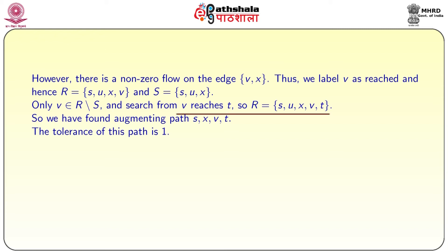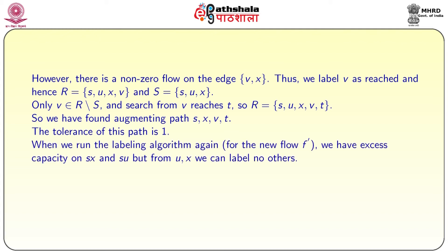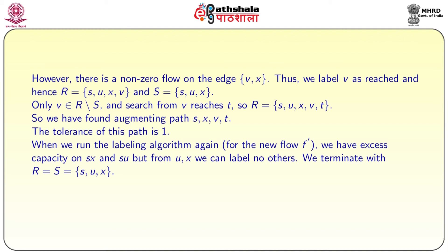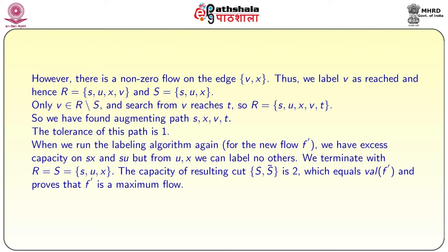Now v is in R minus S, so we search from v and reach t. R becomes {s, u, x, v, t}. We found an augmenting path s-x-v-t with tolerance 1 — it is an exercise to verify this. We then run the labeling algorithm again for the new flow f'. We have excess capacity on s-x and s-u, but from u and x we can label no others. We terminate with R equals S equals {s, u, x}. The capacity of the resulting cut (S, S-complement) is 2, which equals the flow value of f', proving that f' is a maximum flow.